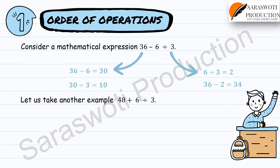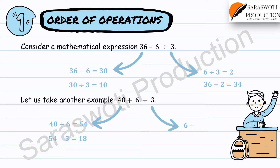For 48 plus 6 divided by 3: if we add 48 and 6 first and then divide the result by 3, we get 48 plus 6 equals 54, and 54 divided by 3 is equal to 18. If we divide 6 by 3 and then add 48, we get 6 divided by 3 equals 2, and 48 plus 2 is equal to 50.